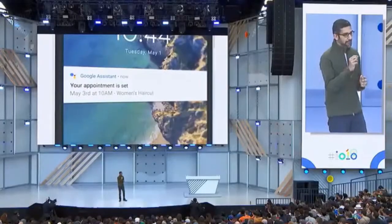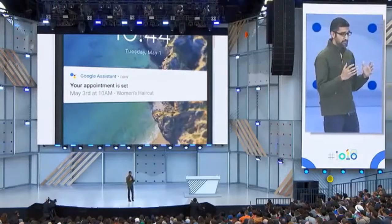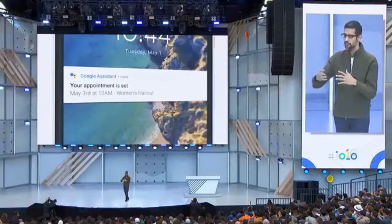That was a real call. The amazing thing is the Assistant can actually understand the nuances of conversation. This technology is called Google Duplex, which brings together investments in natural language understanding, deep learning, and text-to-speech. When done, the Assistant gives you a confirmation notification. Let's say you want to call a small restaurant that doesn't have an easy online booking system — the call goes a bit differently than expected.